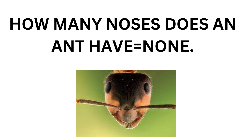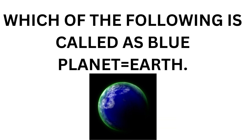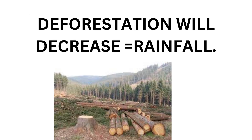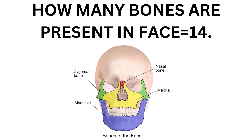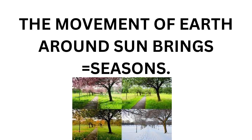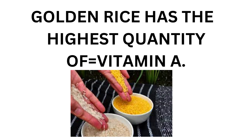How many noses does an ant have? Ants have no nostrils, nasal cavity, or nose. The earth is also called the blue planet. Deforestation results in decreased rainfall and also leads to global warming and climate change. The human face contains 14 bones. The movement of the earth around the sun causes seasons. Golden rice has the highest quantity of vitamin A, which is very helpful for night blindness.